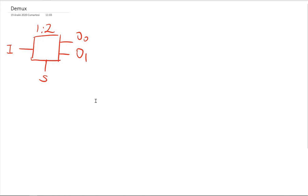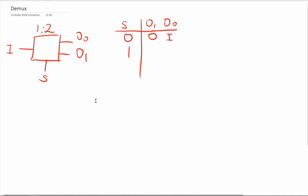This is doing the opposite operation of the multiplexer. So if we write the functionality table: I have select signal S, output 1, and output 0. If select is 0, my input goes to output 0 and output 1 is 0. If the select input is 1, my input goes to output 1 and output 0 is 0.